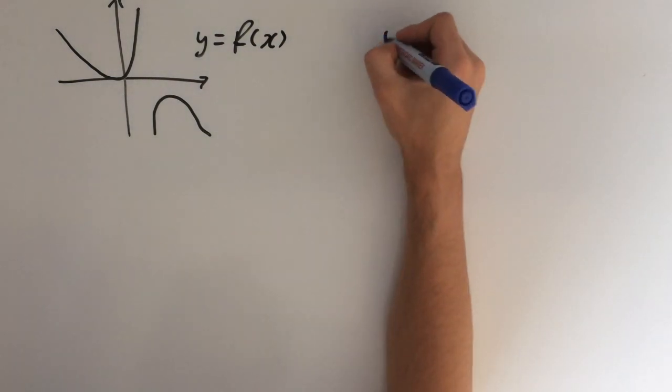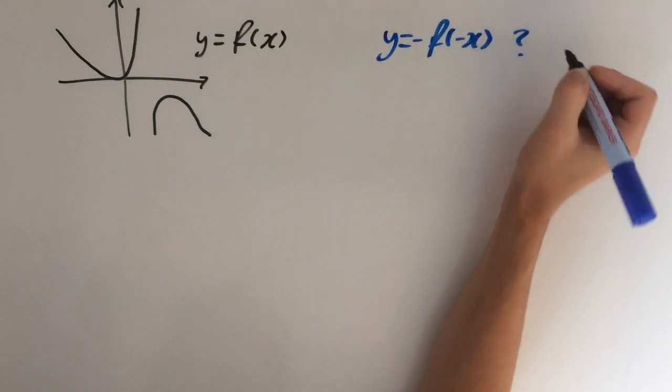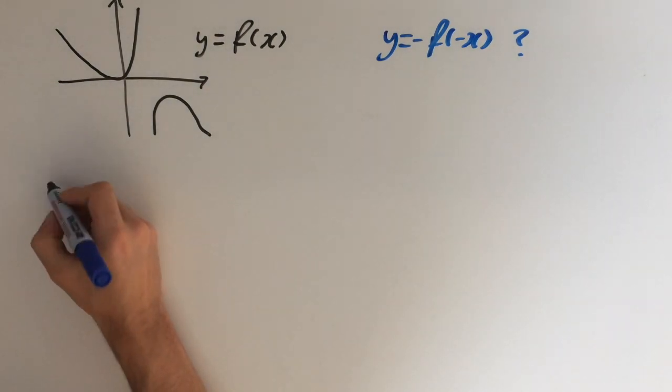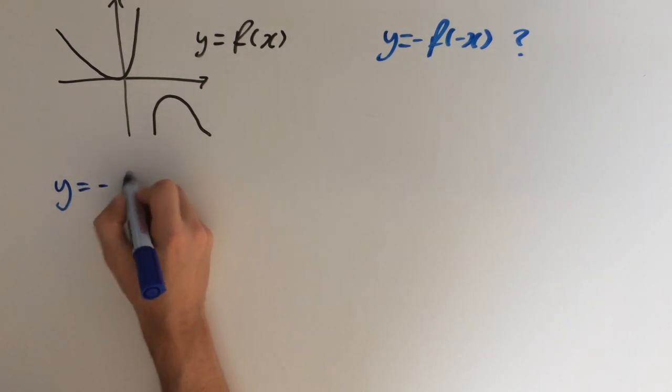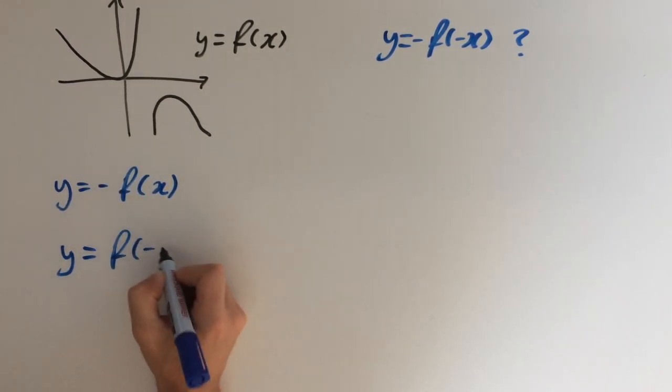We need to work out what y equals minus f of minus x is. What does it look like? This transformation right here is made of two reflections. We can break this down into y equals minus f of x, and y equals f of minus x.